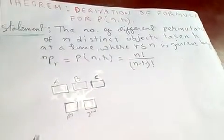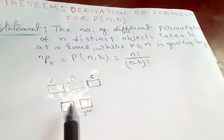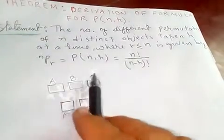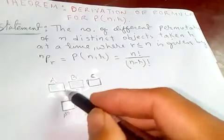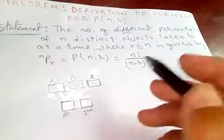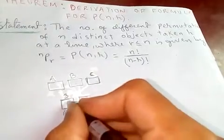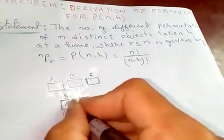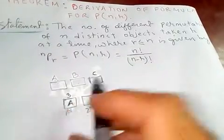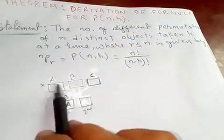So out of three, I'm going to take two at a time. That means I can fill the first box with either a, b, or c — I can fill three items in it. So in the first box, we have three options to fill it. Let's say the first box is filled with a.